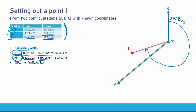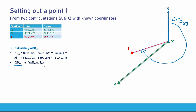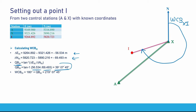The quadrant bearing of XI is the inverse tangent of delta E divided by delta N, using absolute values for both. I calculated the quadrant bearing to be 39 degrees 7 minutes and 45 seconds. For this specific case, the whole circle bearing is 180 plus the quadrant bearing of XI, giving 219 degrees 7 minutes and 45 seconds. This is the whole circle bearing of XI.